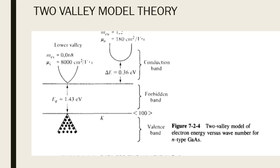These alloys exhibit Gunn diode characteristics when a potential of 2000 to 4000 volts per centimeter is applied. What is special about these alloys is their band structure. Normally, electrons crossing from the valence band to the conduction band causes conduction. There is a valence band, a conduction band, and a forbidden band gap energy of 1.43 electron volts, meaning electrons must have that energy to cross over and conduct.